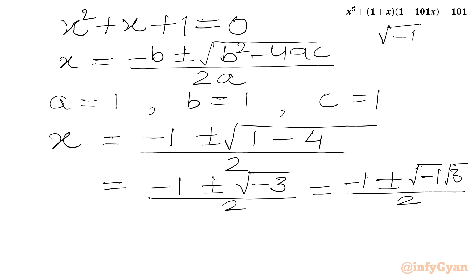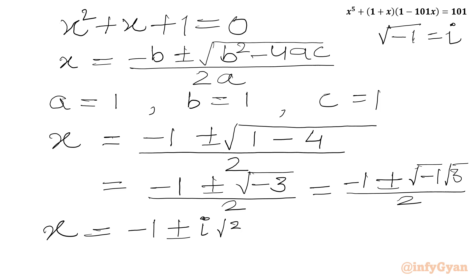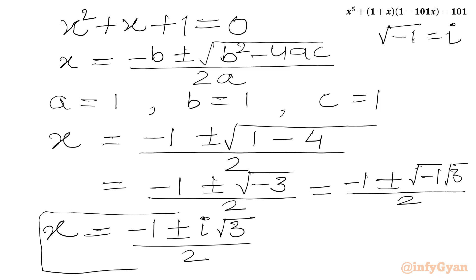This is the complex number i. So x will be equal to minus 1 plus minus i times square root of 3, all over 2. So we are getting two complex solutions.